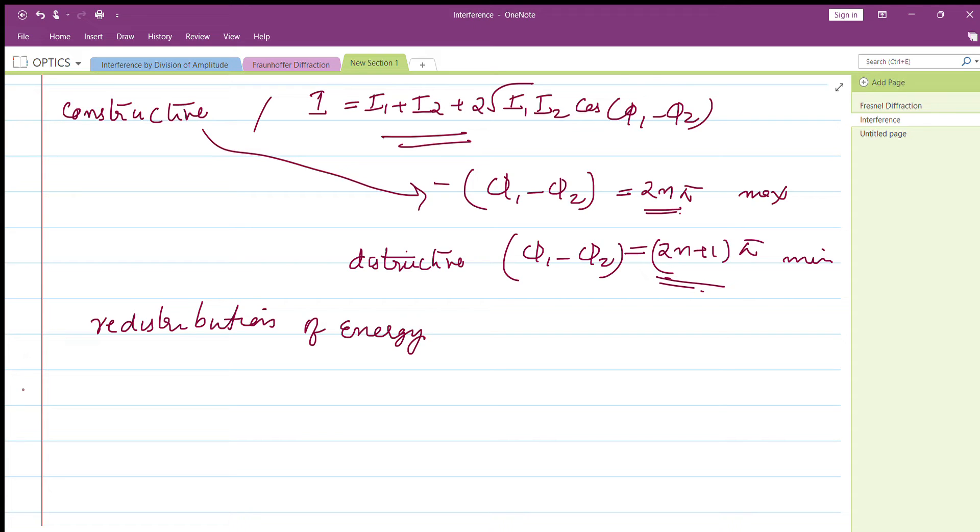Phase difference is 2π/λ into path difference. This relation you should be able to write. Coherence length you should be able to write.